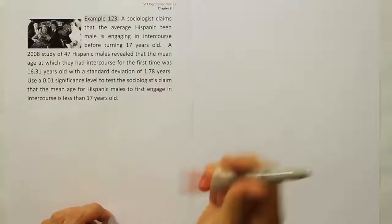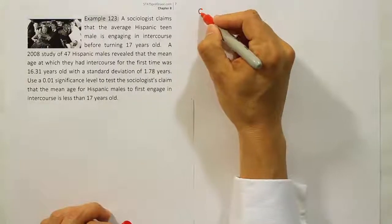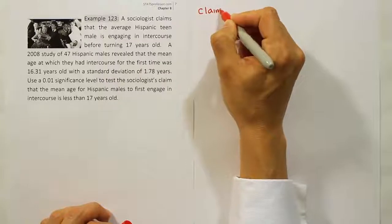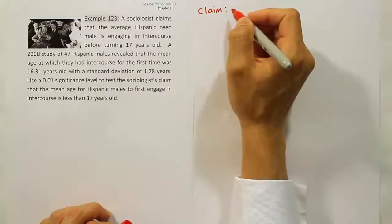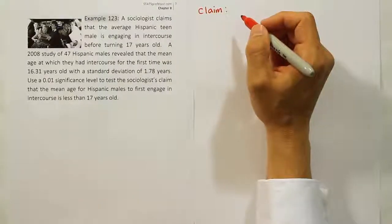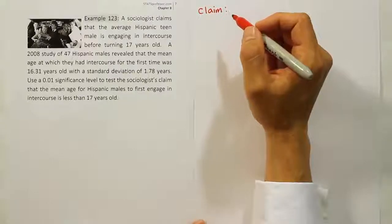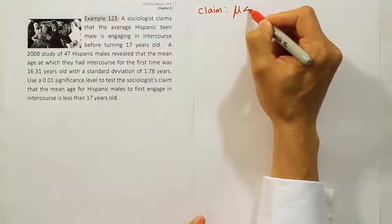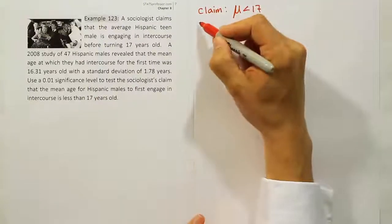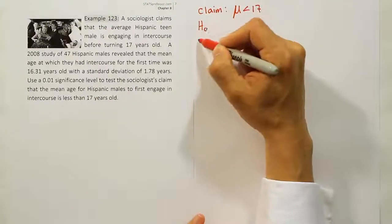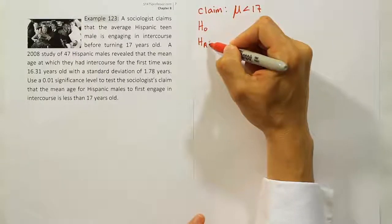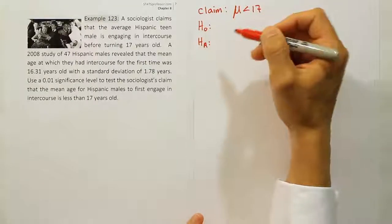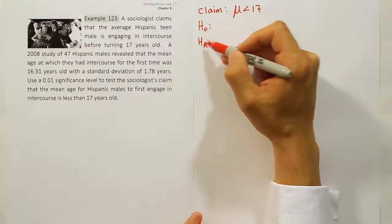Let's do that then. We're going to write our claim down first. Our claim is going to essentially express the idea that they stated there in that last sentence that the mean age is less than 17. And we'll have a corresponding H0 HA for the problem. So our null hypothesis H0 and our alternative HA.